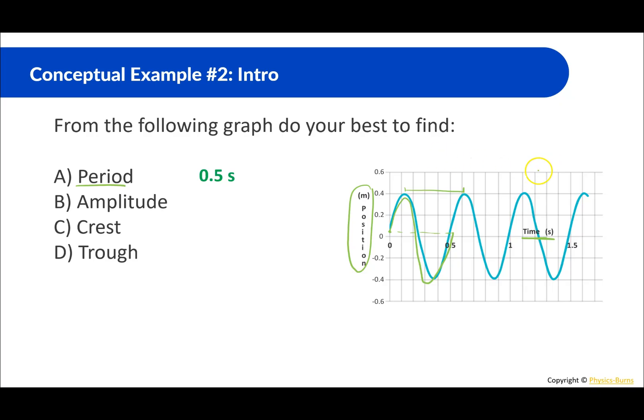Remember the amplitude we already discussed this is how far the maximum displacement. So that's going to be 0.4 meters. Crest we discussed that. Again the positive direction which is 0.4 meters. And trough again is the same thing but in the negative direction. So that's negative 0.4 meters.